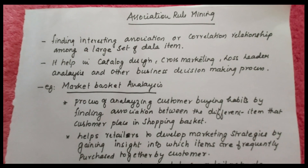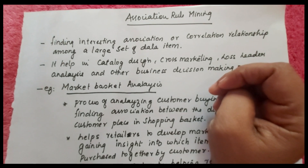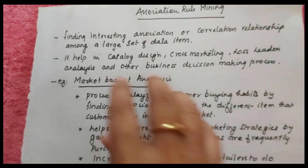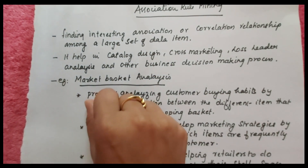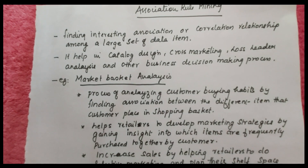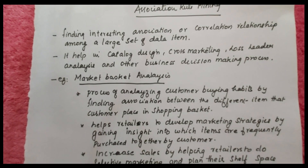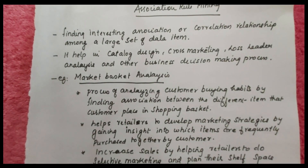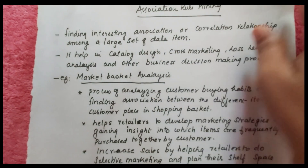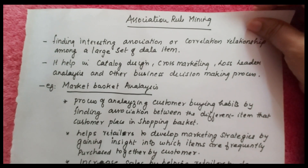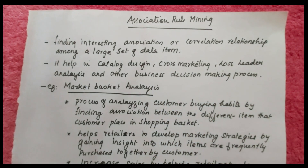Today we are discussing association rule mining, an important topic in data mining. It involves finding interesting associations or correlation relationships among a large set of data items. Companies are interested in this because their databases contain large numbers of data items, and they want to find relationships and correlations among them. Association rule mining helps in catalog design, cross marketing, loss leader analysis, and other business decision making processes.